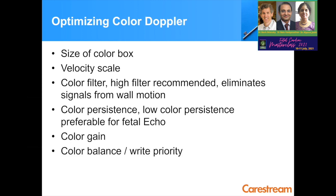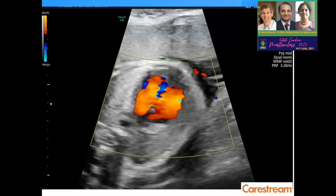For color gain: if you are looking at low-velocity structures like the IVC, SVC, pulmonary veins, or ARSA, then velocity can be low and color gain can be a little high. Color balance or write priority is always set at maximum while doing fetal echo. Write priority is like adding the color over your grayscale image, and it is kept at higher values while doing fetal echo.